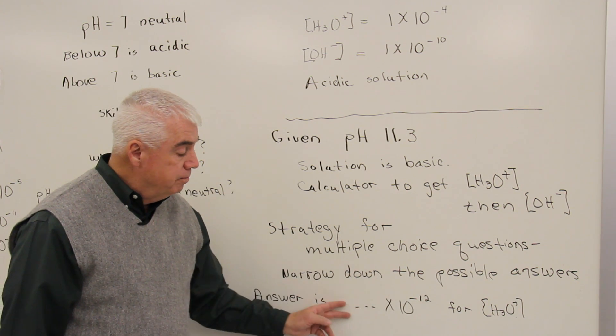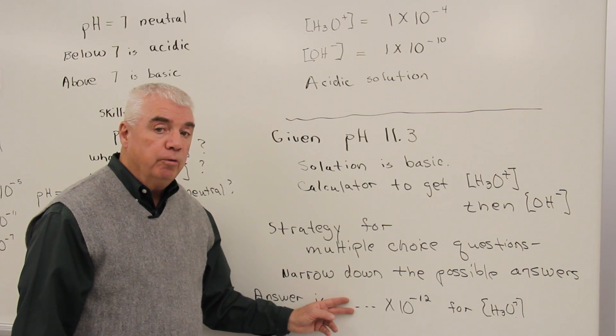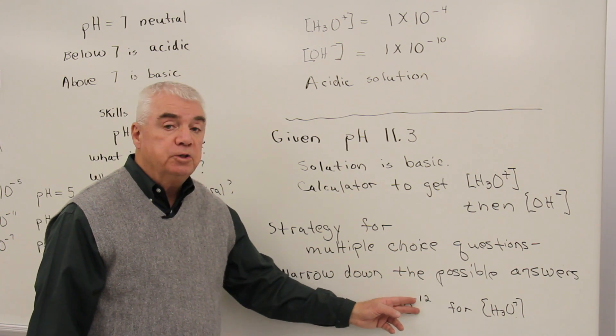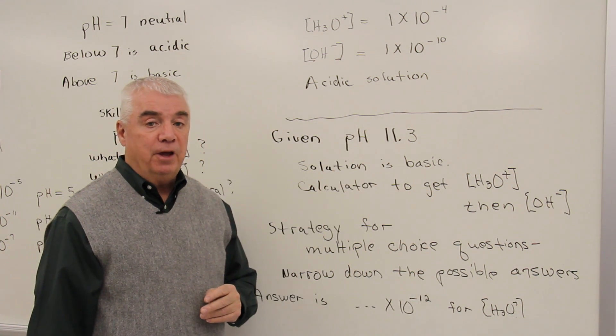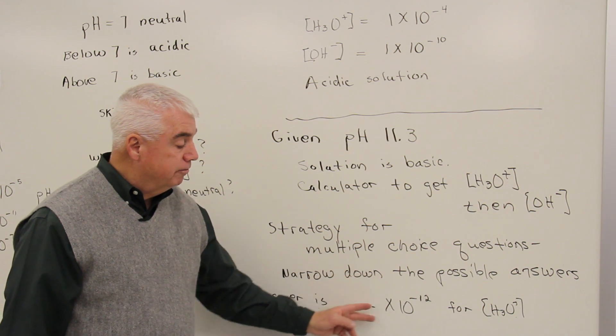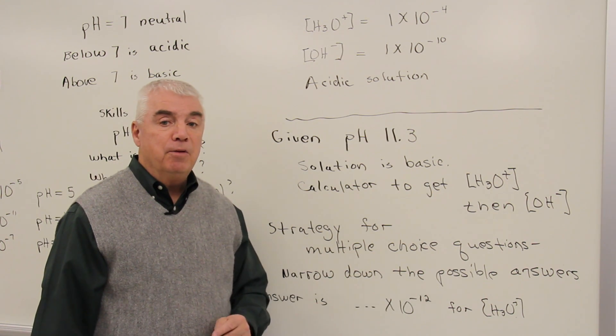Over here, if we took the negative logarithm of that, it's going to reduce that 12 a little bit. In other words, it's going to be 11 something. So we'd look for something or other times 10 to the minus 12.